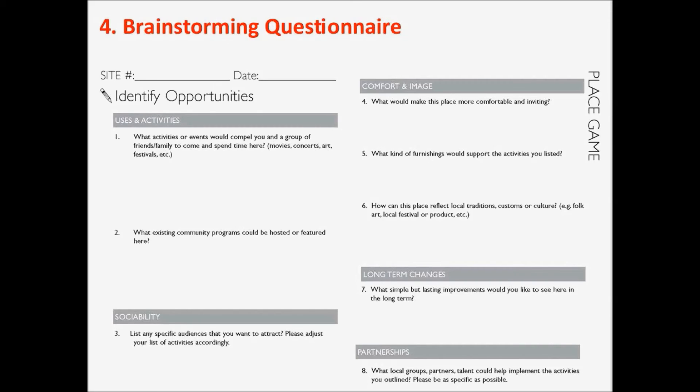Question five is about the furnishings that would support the activity. Some of it is about comfort and feeling invited, but here it's really about what would make that program happen. If we're talking about a concert or an outdoor movie screening, this is the place to discuss a stage, PA system, projector, and all the little things that may be needed — everything involved in producing an event. We find that communities are very sophisticated and understand very well what is needed to support their activities.